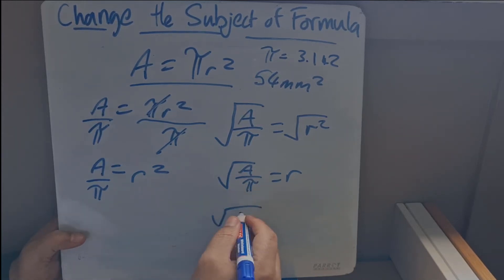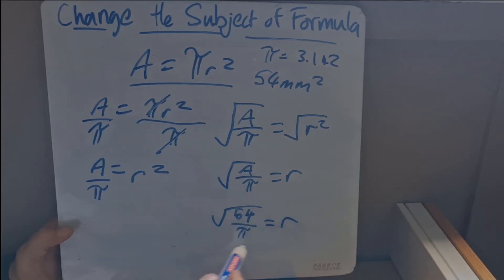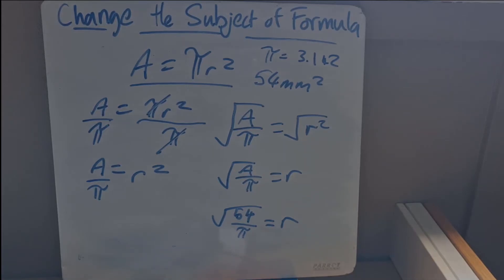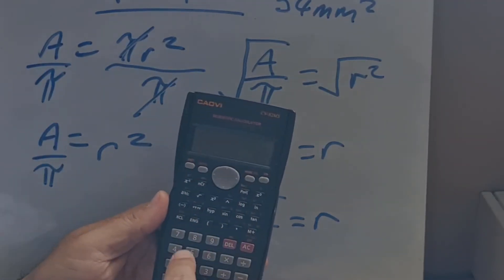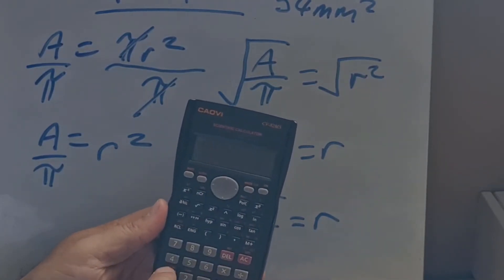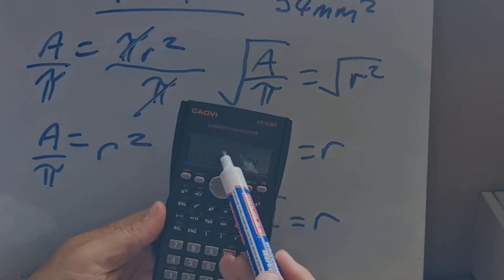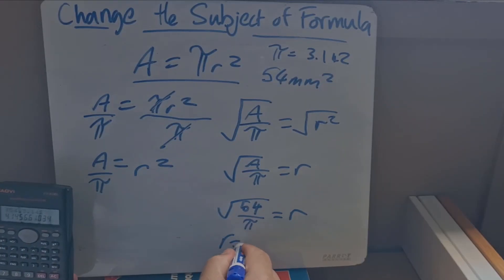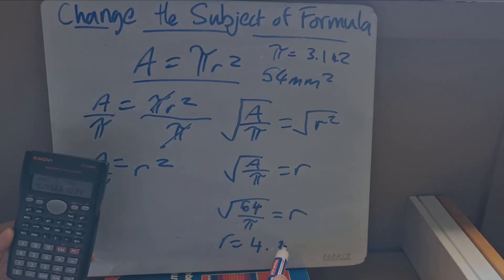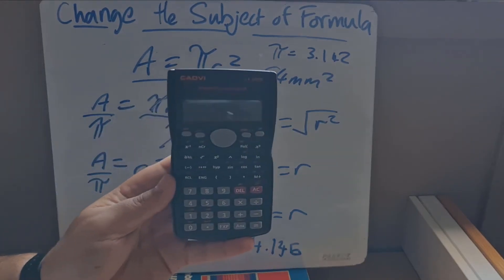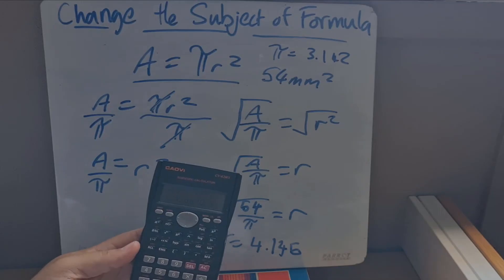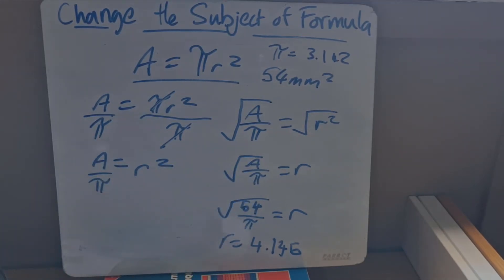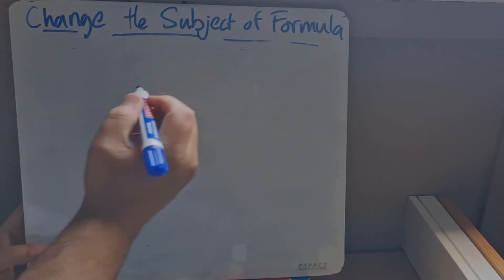We know a is 54, so we have the square root of 54 over pi equals r. Putting this into the calculator — square root of 54 divided by 3.142 — gives us r equals approximately 4.146.